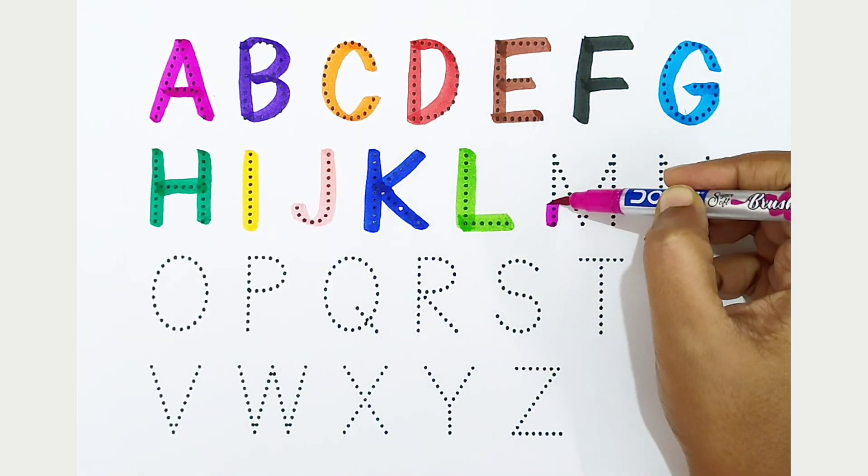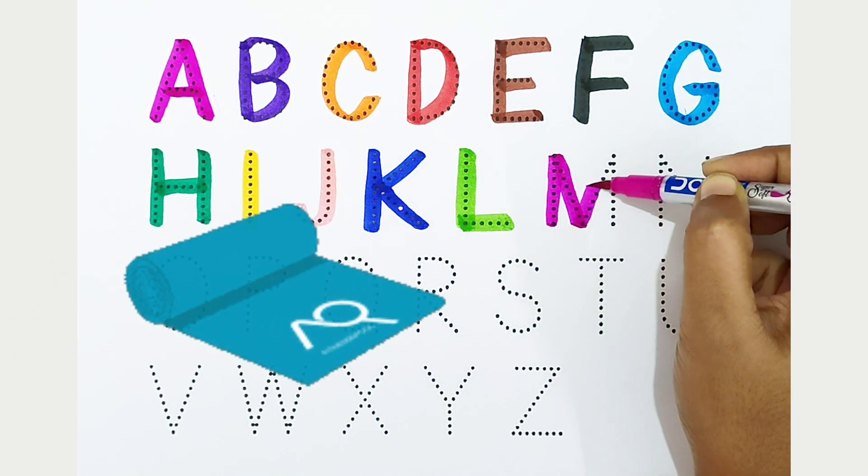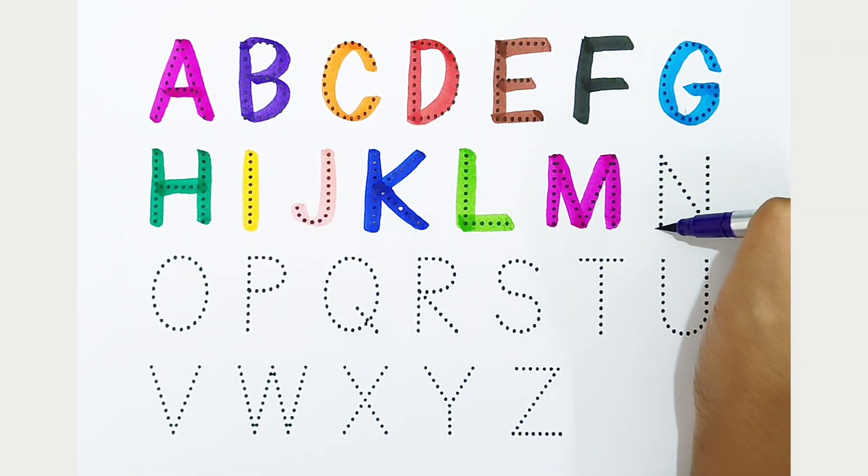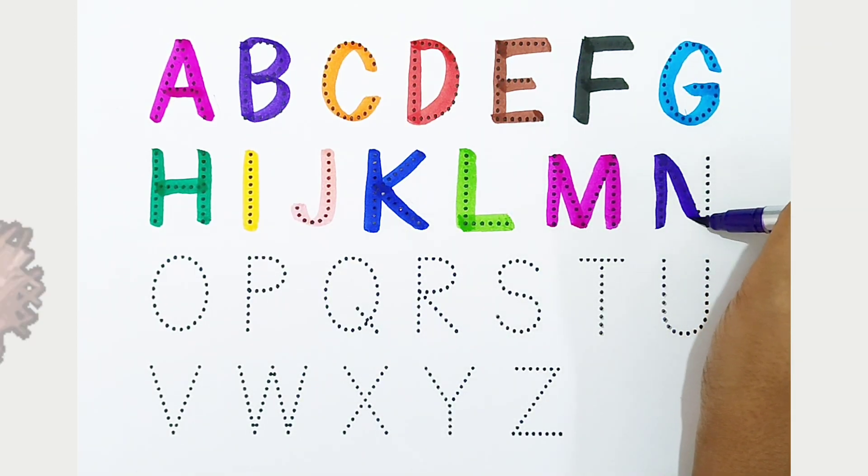M - dark pink color. M is for mat. N - violet color. N is for nest.